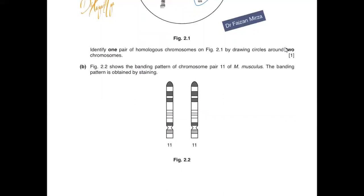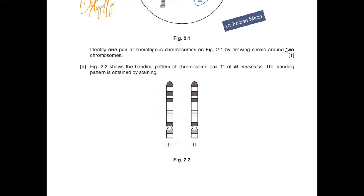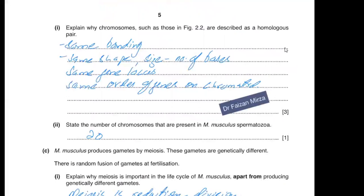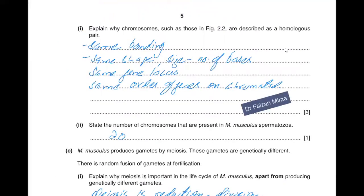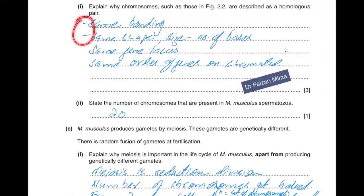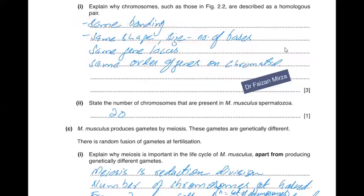Figure 2.2 shows the banding pattern of chromosome pair 11. The banding pattern is obtained by staining. Homologous chromosomes have the same banding pattern, same shape, size, and number of bases. The number of gene loci is the same and the order of genes on the chromatids is the same. It is better to write the answer in continuous prose rather than in bullet points.